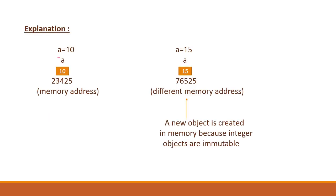Firstly, you assigned value 10 to a, so an object was created with value 10 which has a memory address 23425. This is the identity of this object, and it is tagged with variable a.